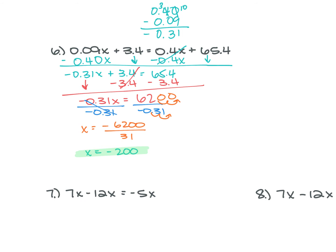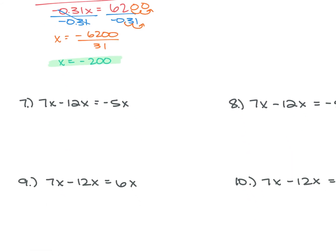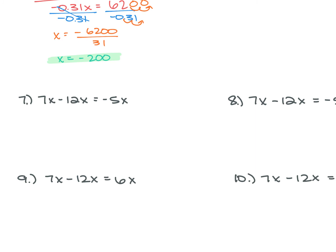For problems 7 through 10, you're just solving these. Remember: if you get something that's a true statement, your answer is infinitely many solutions; if you get a false statement, your answer is no solution. For number 7, you have 7X minus 12X is equal to negative 5X. 7X minus 12X is negative 5X. So negative 5X equals negative 5X — that's a true statement, so it's infinitely many solutions.